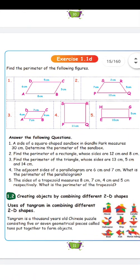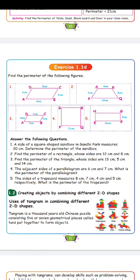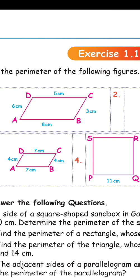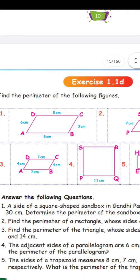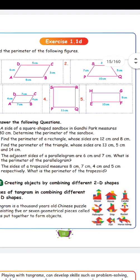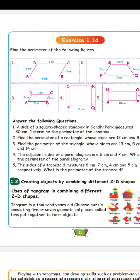Now we need to fill the perimeter. Perimeter is all four sides added together. AB is 8cm, BC is 3cm, CD is 5cm, DA is 6cm. So 8 plus 3 plus 5 plus 6: 8 plus 3 is 11, plus 5 is 16, plus 6 is 22. The perimeter is 22cm. For a square sandbox measuring 30cm on each side, all 4 sides equal 30cm, so we calculate the perimeter.